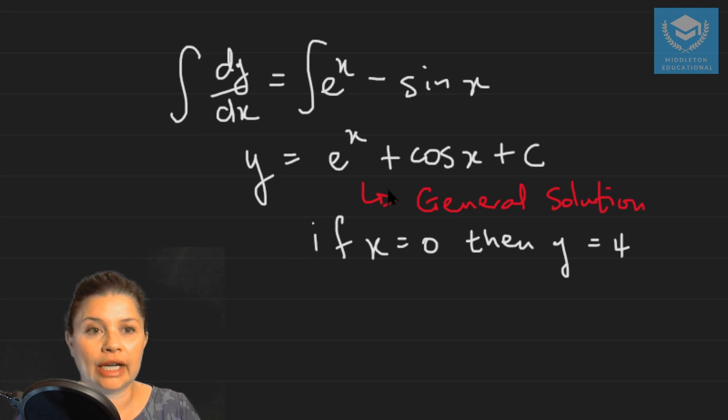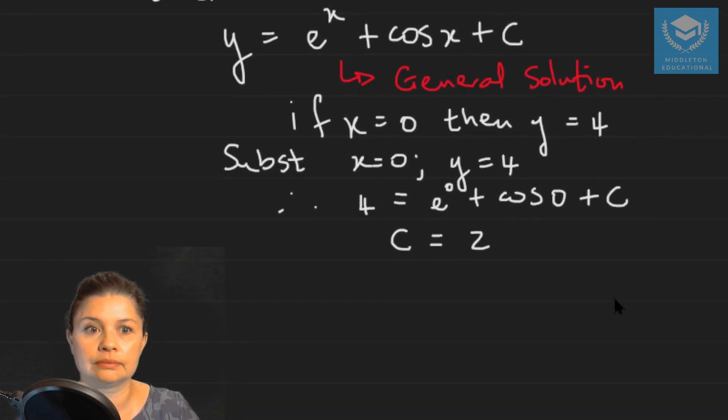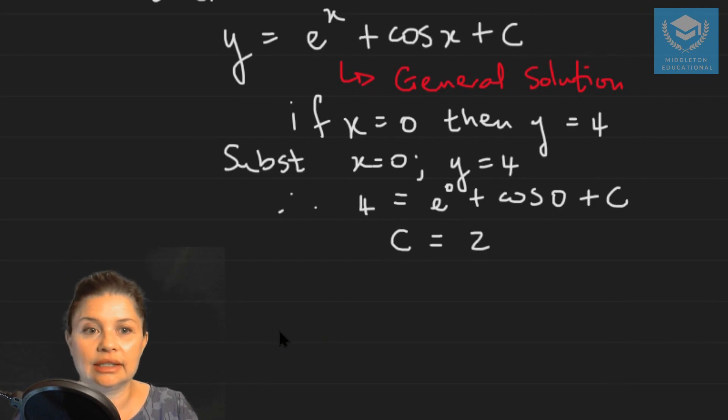In order to find what we call the particular solution for this equation, we substitute that initial condition into the general solution, which means we get 4 equals e^0 plus cos 0 plus C, which means that our constant value is going to be 2. That means our particular solution is y equals e^x plus cos x plus 2.